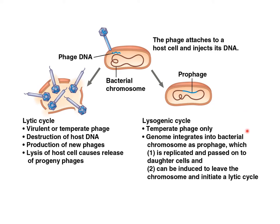Basically, the genome of a phage integrates into the chromosome of the bacteria or host, is replicated as the cells undergo cell division, and can be induced to leave the lysogenic cycle and enter the lytic cycle under certain conditions. Temperate phages are really interesting in biotechnology because under certain conditions you can force it to go into the lytic cycle, where it will eventually destroy the cells but produce more phages to affect more cells around it.